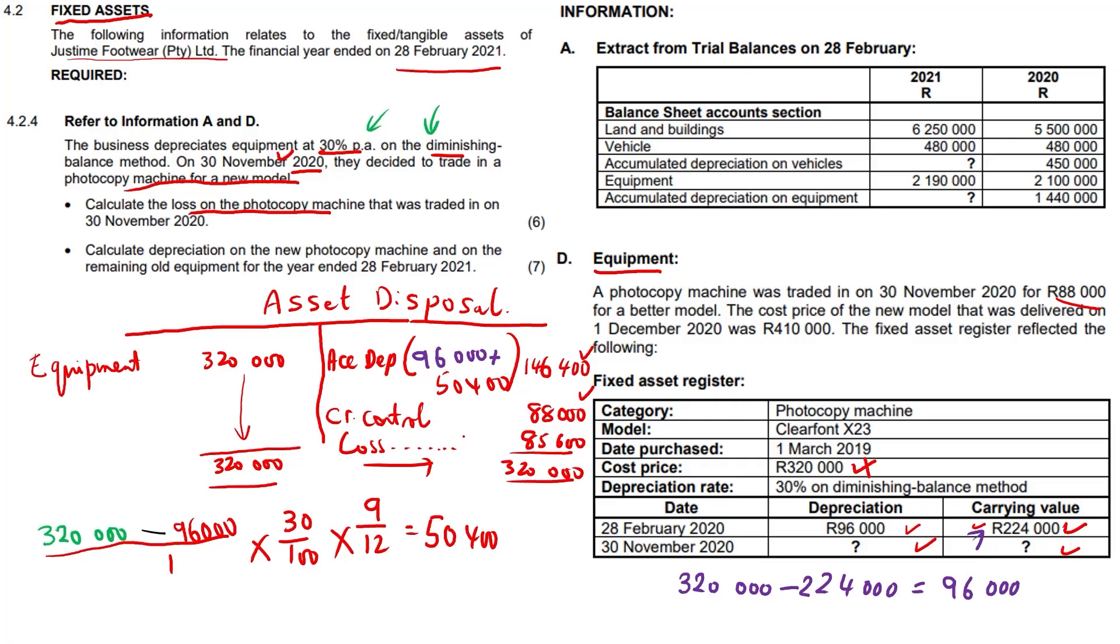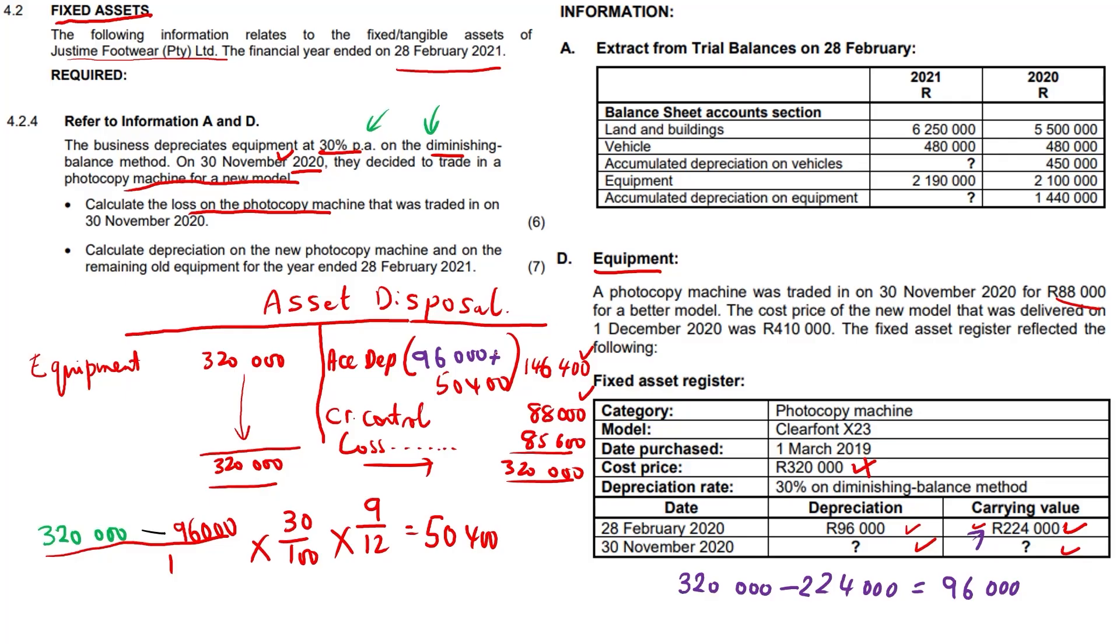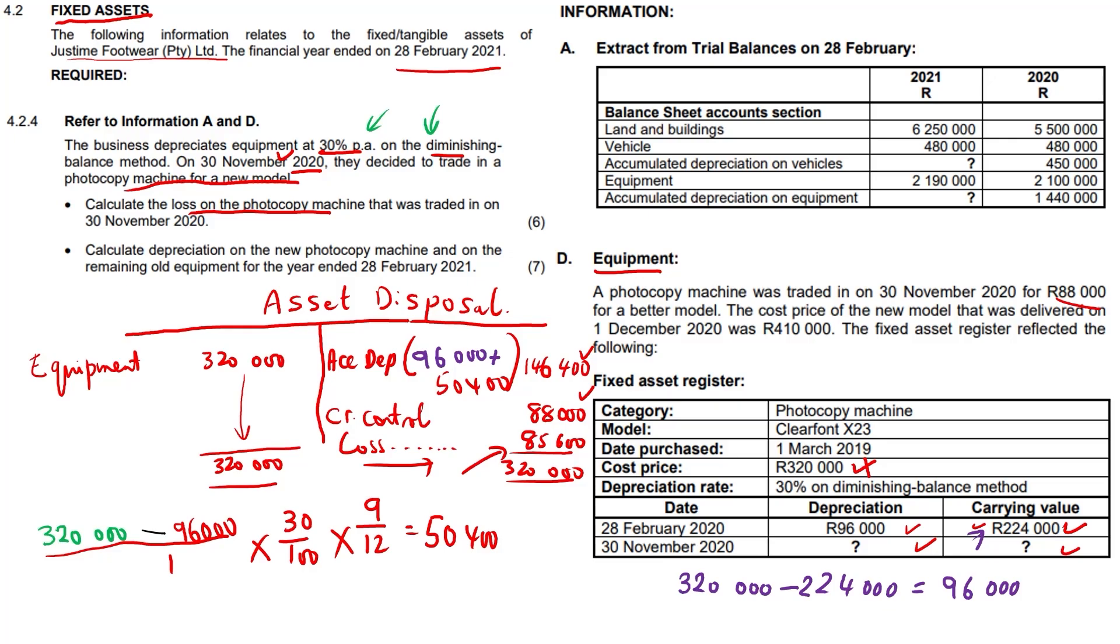Now you're probably thinking, what if I had to be using the answer sheet? Let's start with that: $320,000 minus $96,000 plus $50,400 minus the $88,000 equals that loss of $85,600. If you showed the answer only like that, you'd still get full marks, 6 out of 6. But here's a full set of workings that showed us how we got to that answer. That was the loss on the photocopy machine.